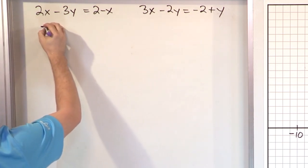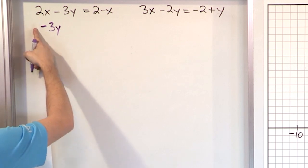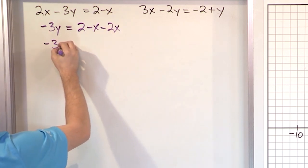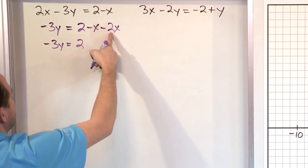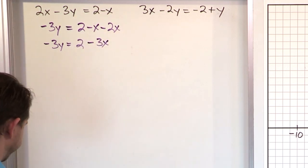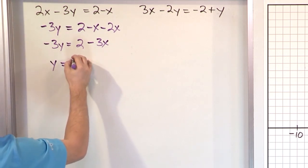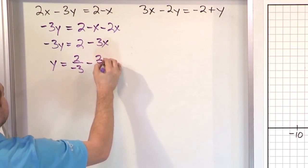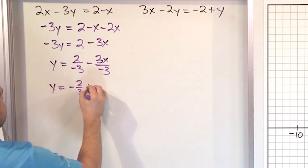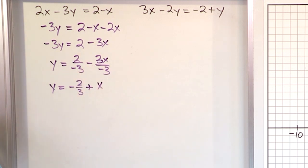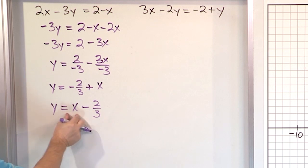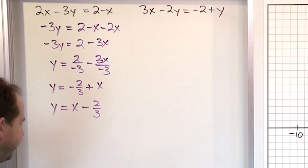So we're going to leave the y over here, but it has a negative sign, so we have to leave it as negative 3y. We'll subtract the 2x, meaning we're going to bring it over to the other side. So we'll have 2 minus x minus the 2x. Now let's clean up the terms: we'll have 2, and what is minus x minus 2x? That's minus 3x. Negative 1 minus 2 is negative 3. And then we'll divide everything by negative 3. So we'll have negative 2 thirds, and this makes a positive because they're multiplied, so it's x minus 2 thirds. So we have mx plus b - this is the slope, and this is the y-intercept.